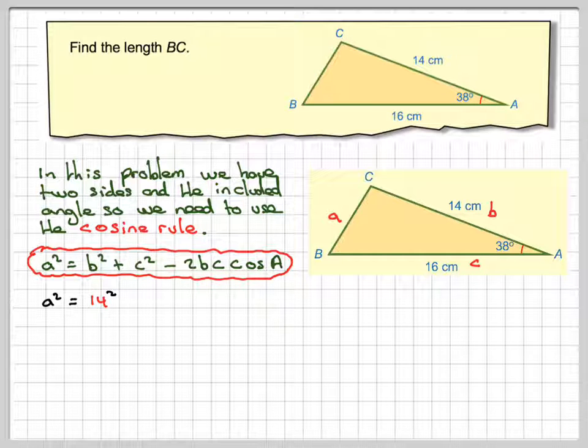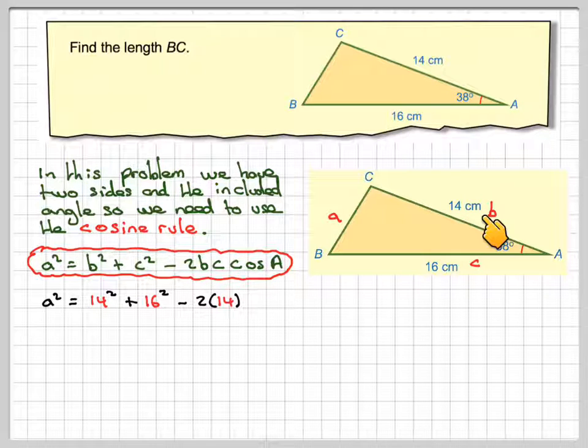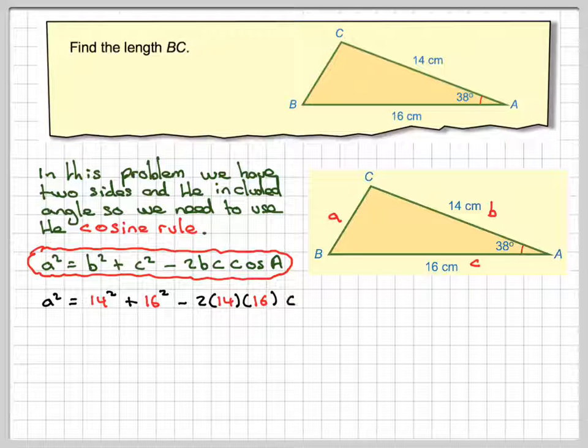Substituting the numbers in, we're going to have that A squared is equal to B squared, which is 14 squared, plus C squared, which is 16 squared, minus 2 times B, times 16, times the cos of the angle between them, 38.